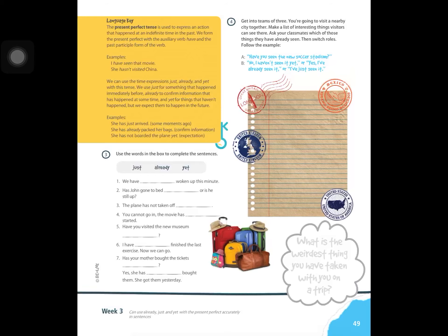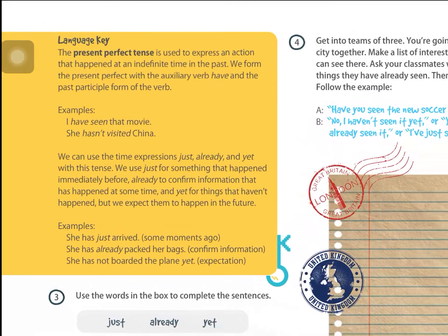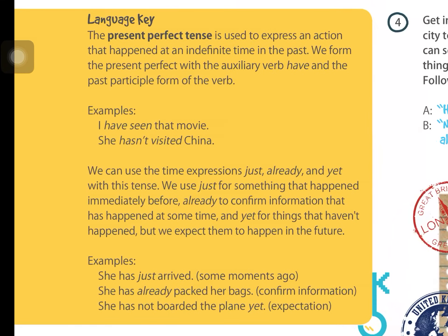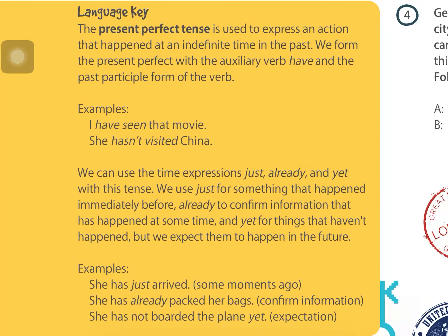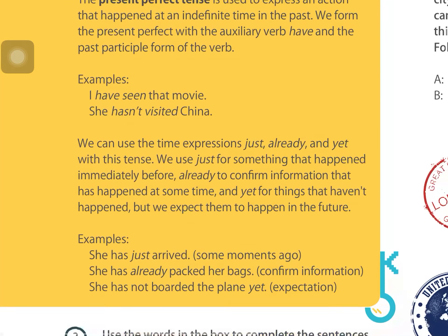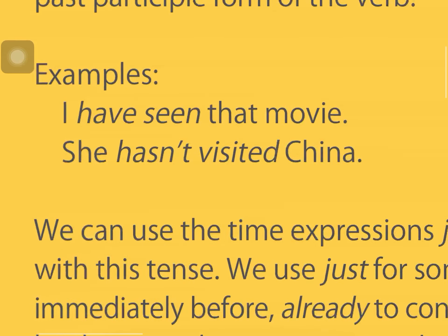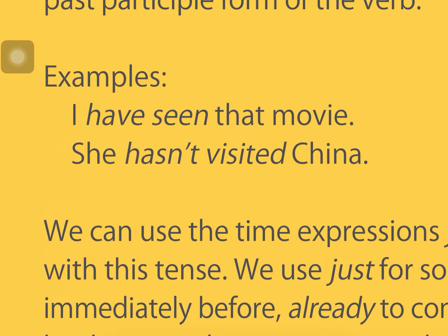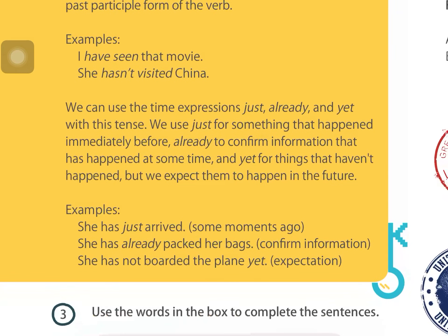Language key — according to what we studied in the virtual class: the present perfect is used to express an action that happened at an indefinite time in the past. We form the present perfect with the auxiliary verb 'have' or 'has' and the past participle form of the verb. For example: 'I have seen that movie' (affirmative) and 'She hasn't visited China' (negative).